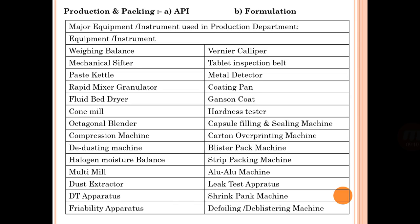Production and packaging uses various instruments including: weighing balance, mechanical stirrer, paste kettle, rapid mixture granulator, fluid bed dryer, octagonal blender, multi mills, dust extractor, coating pan, hardness tester, tablet compression machine, blister packing machine, and cartoon overprinting machine.